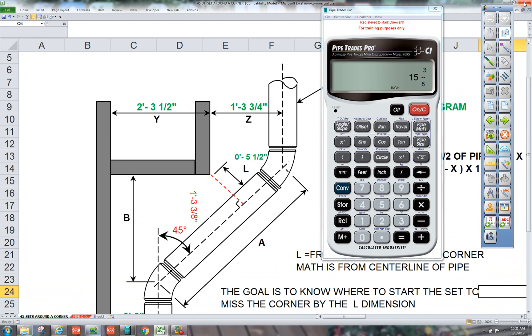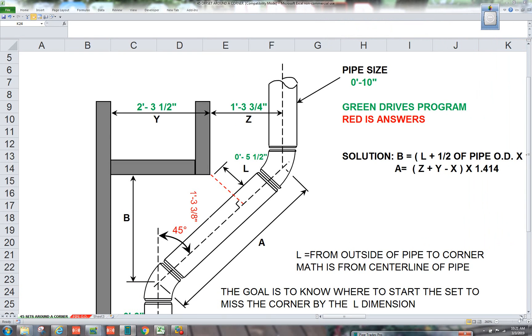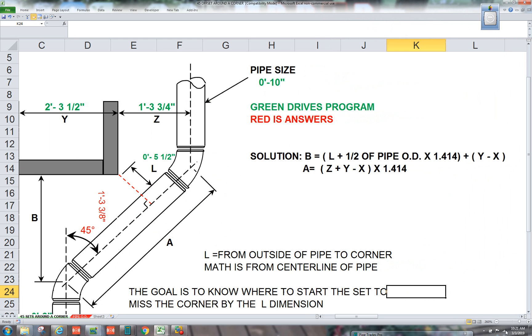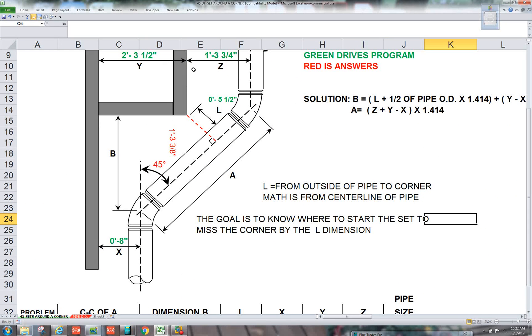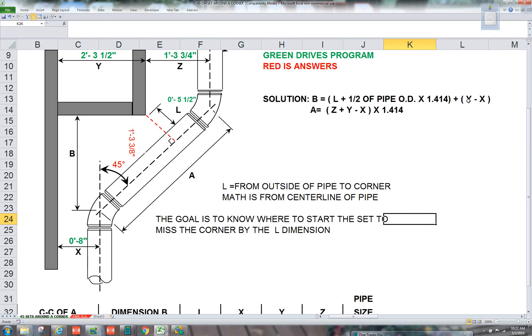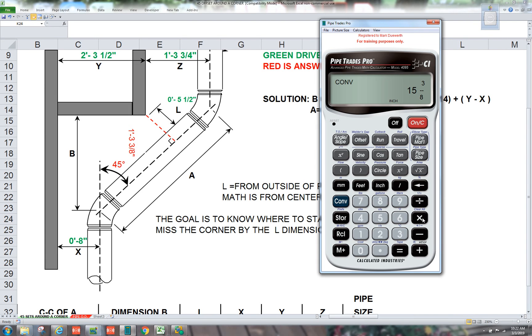Now what we're going to do is we're going to take Y minus X. So we take Y minus X. So here we have two foot three and a half to the outcropping, and our center of our riser is at eight. So let's do that.